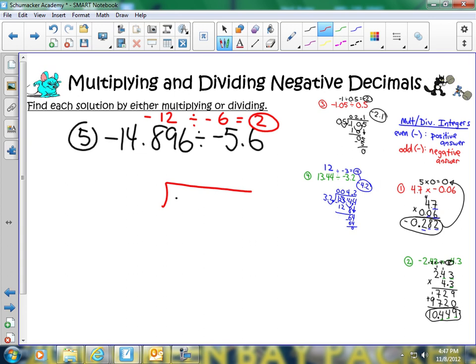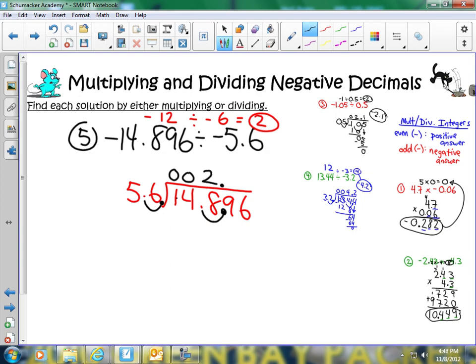Let's go ahead and set up our problem. We have 14.896 inside our box. 5.6 outside the box. We're going to go ahead and move our decimal over one spot. Bring it up. 56 does not go into 1. Does not go into 14. How many times does it go into 148? Well, I know that 3 times 5 is 15. Therefore, I'm going to try a 2. 2 times 6 is 12. Carry my 1. 2 times 5 is 10. Plus 1 is 11. I subtract. I end up getting 36. So far, so good. Bring down my 9.